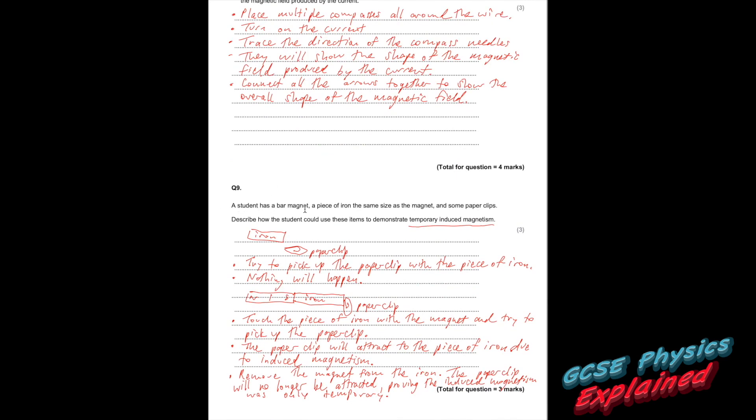And finally number nine. A student has a bar magnet, a piece of iron the same size as the magnet, and some paper clips. Describe how the student could use these items to demonstrate temporary induced magnetism. If you induce something, it means you've made it happen. And temporary means it's not going to happen forever. What you want to do is get your little iron bar. Put it next to the paper clip. Try to pick the paper clip up with a piece of iron, and nothing will happen. Then you want to touch the piece of iron with the magnet and try to pick up the paper clip. And what will happen is the paper clip will attract to the piece of iron due to induced magnetism. Then what you want to do is take the magnet off the piece of iron. And that will prove, if the paper clip falls off, which it will, that will prove that the induced magnetism was just temporary. So remove the magnet from the iron. The paper clip will no longer be attracted. Proving the induced magnetism was only temporary.